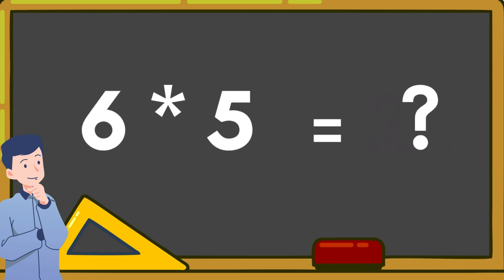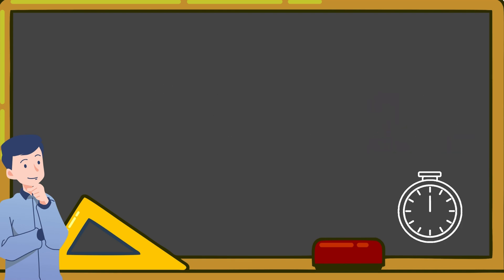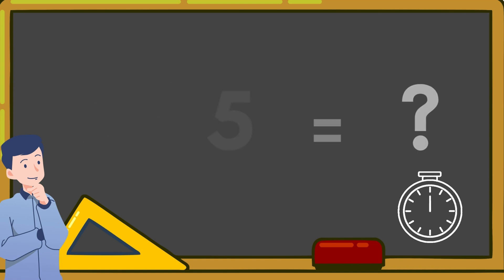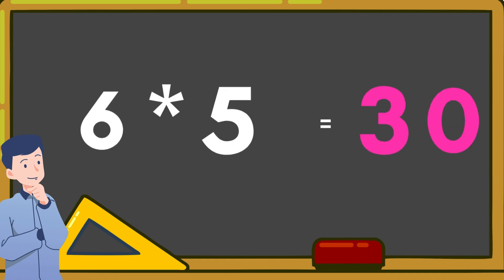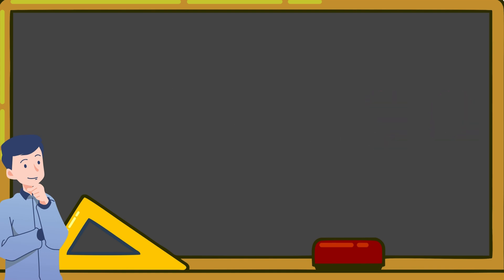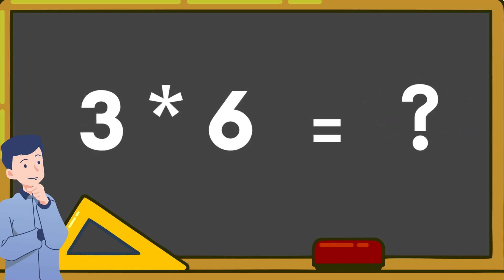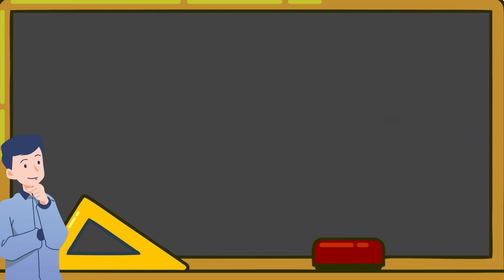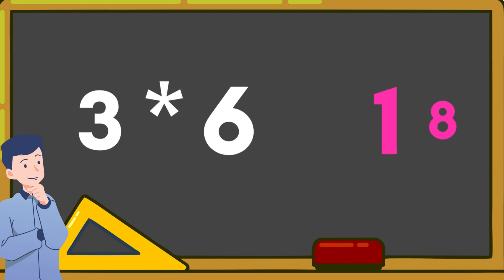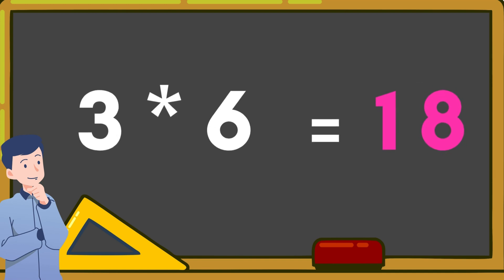6 times 5 is equal to — That's correct. 6 times 5 is equal to 30. 3 times 6 is equal to — That's correct. 3 times 6 is equal to 18.